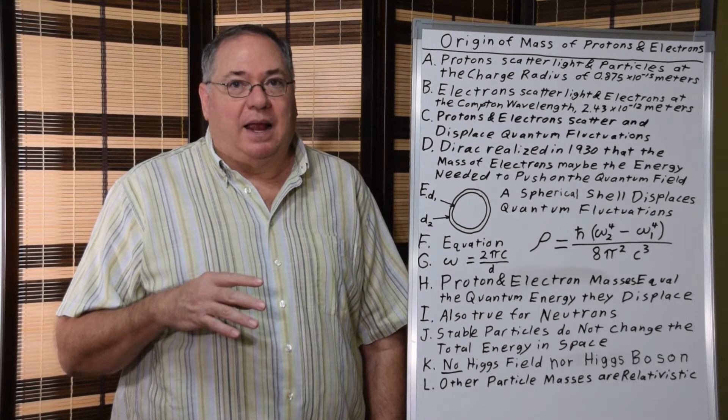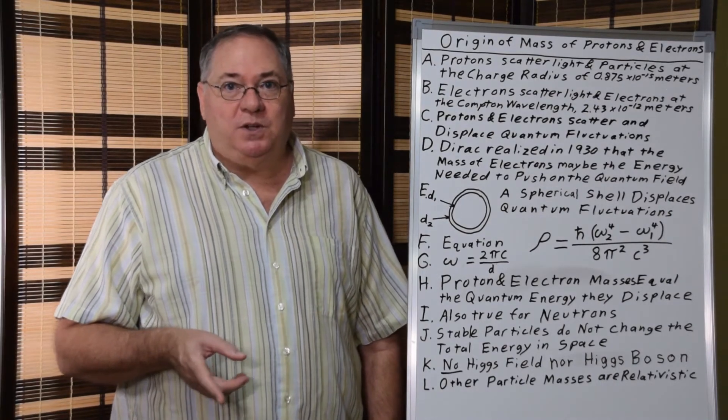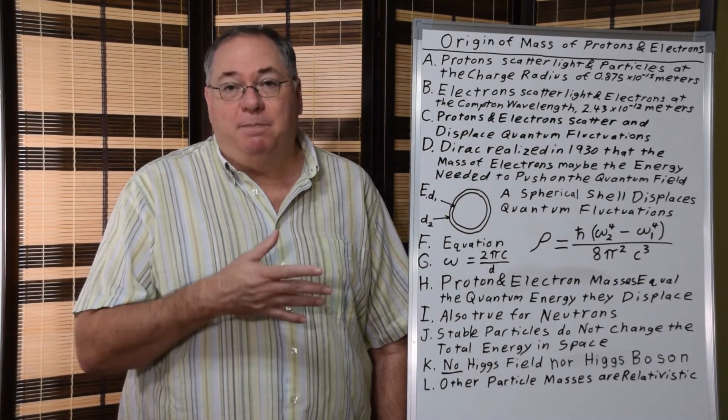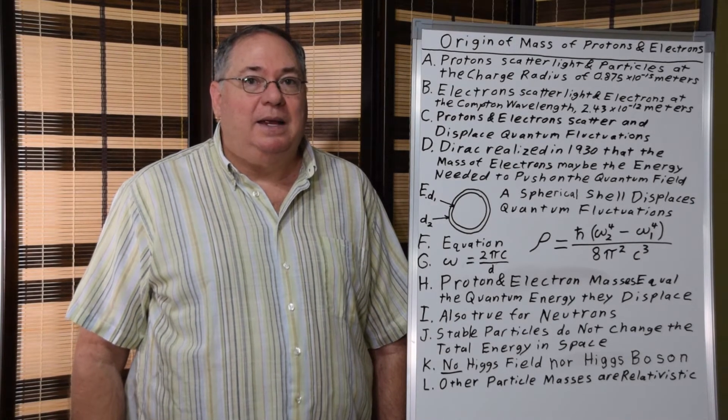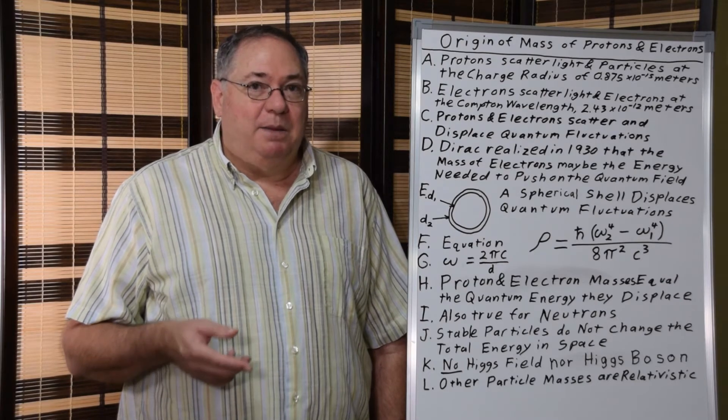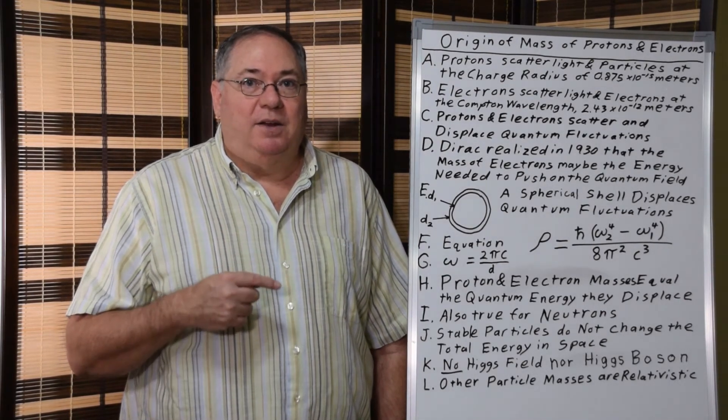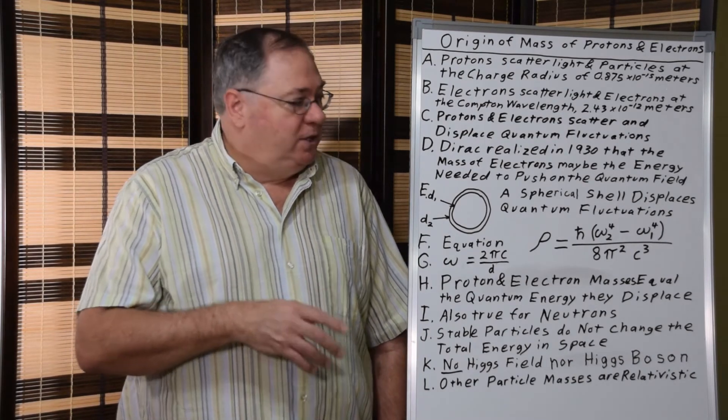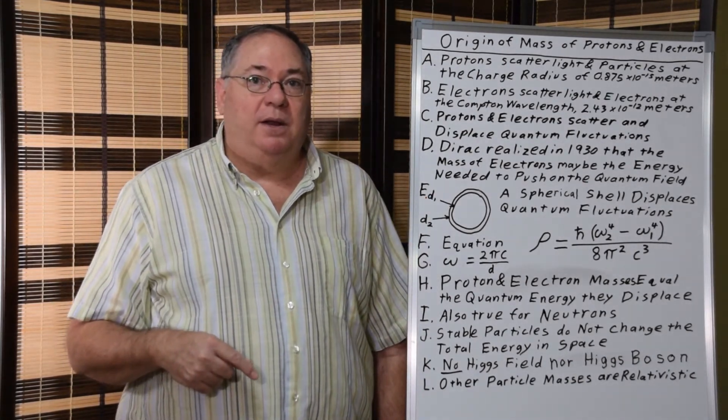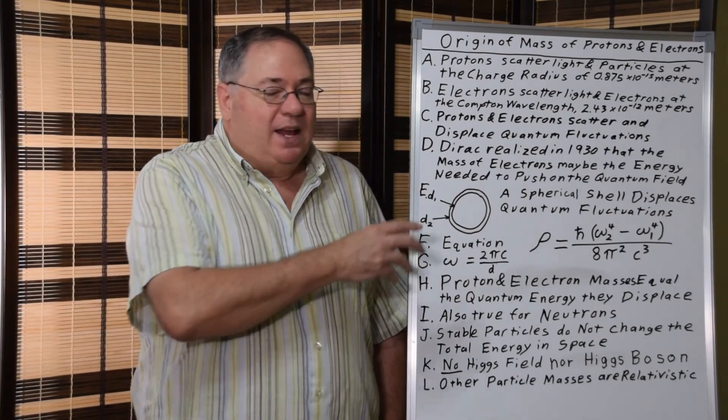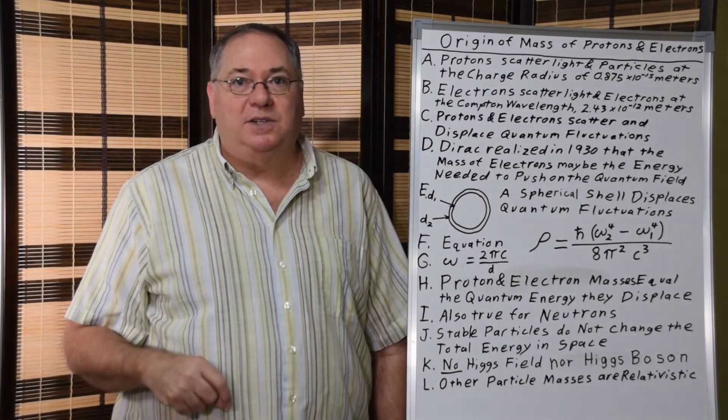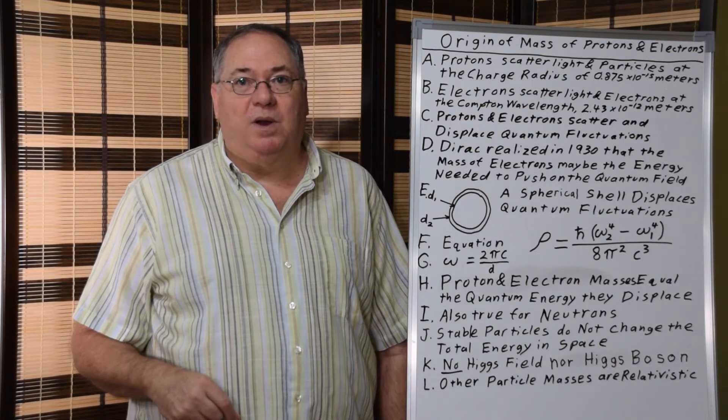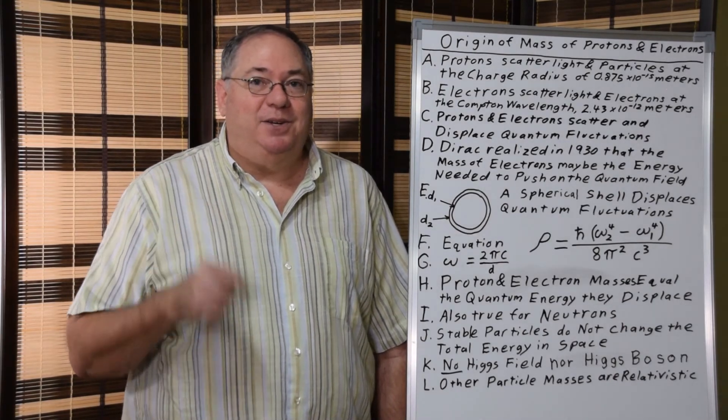And if you want to learn more about quark theory and quantum theory, you can purchase one of my books. The key thing here is that the origin of mass is the displacement of quantum fluctuations. In the case of electron and proton and neutron, it's a direct displacement in line with the spherical shell model. In the case of the unstable particles, it's those particles being relativistically accelerated so that they have relativistic mass in addition to their rest mass, which is determined by the displacement of quantum fluctuations. And that's where mass comes from. That's the origin of mass.